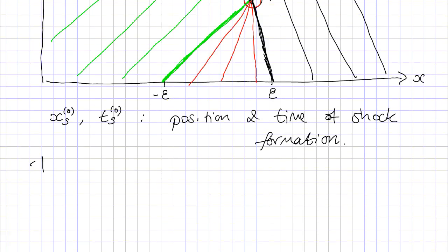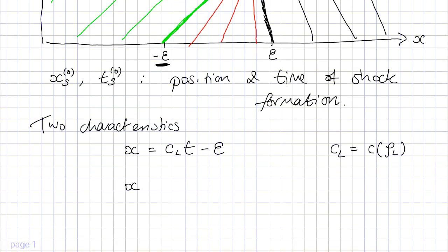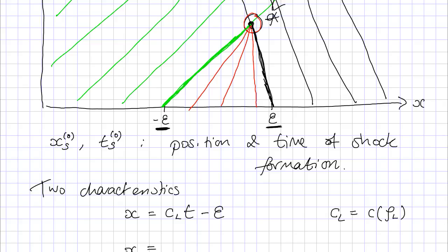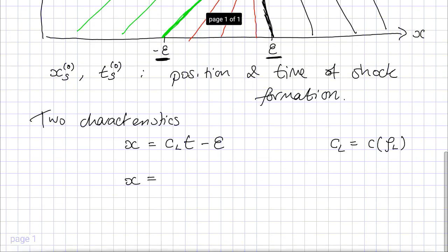So the two characteristics that we're interested in. From the left, we have X equals, here I'm travelling with the wave speed C_L times T minus epsilon. This epsilon comes from the fact that the characteristic we're talking about starts at minus epsilon. And it has the velocity for the left-hand side, which is this C_L, which is defined as the C evaluated at the density on the left. The other one we want, that's the one from the right-hand side. This starts at, for time equals zero, this starts at X equals epsilon. So the appropriate characteristic is C_R, for on the right, T plus epsilon. Again, this C_R is nothing but the wave speed evaluated at the density on the right.